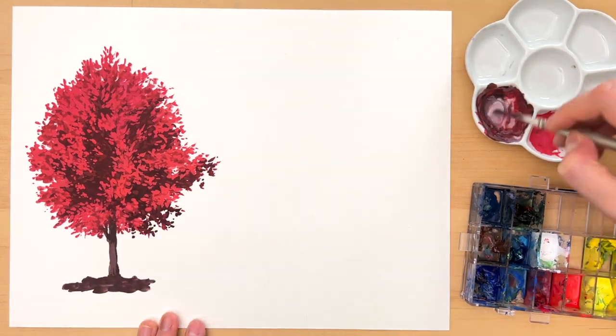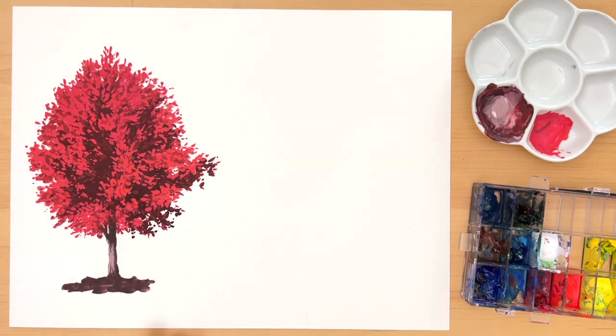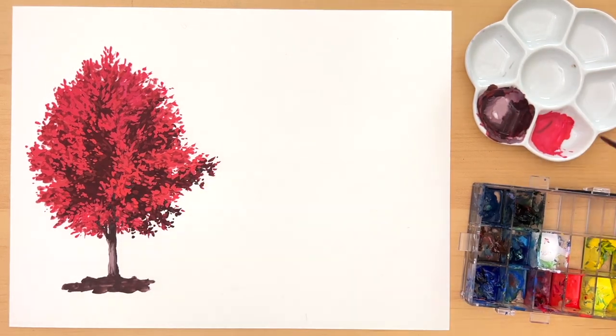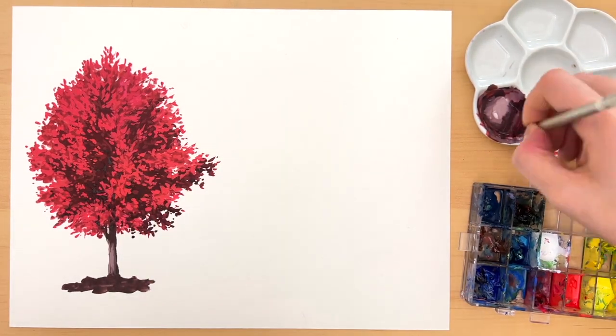And of course we're doing the same thing for the tree trunk just to keep everything consistent. Now I'm mixing a slightly darker color than my current shadow and going in, reinforcing some of the darkest parts of the shadow area.